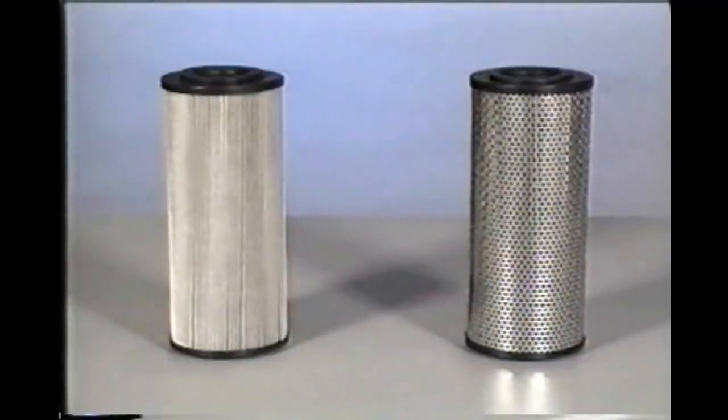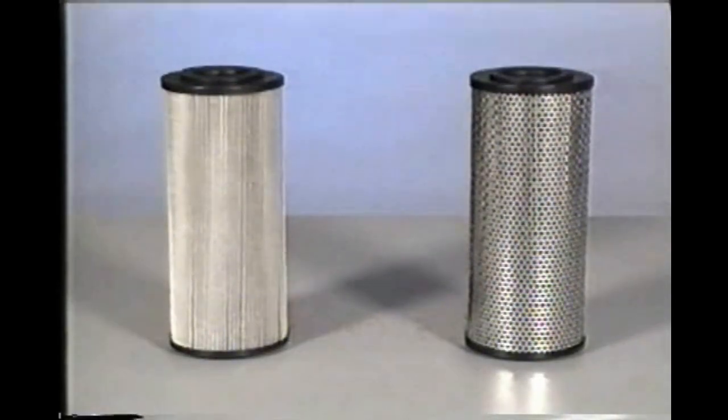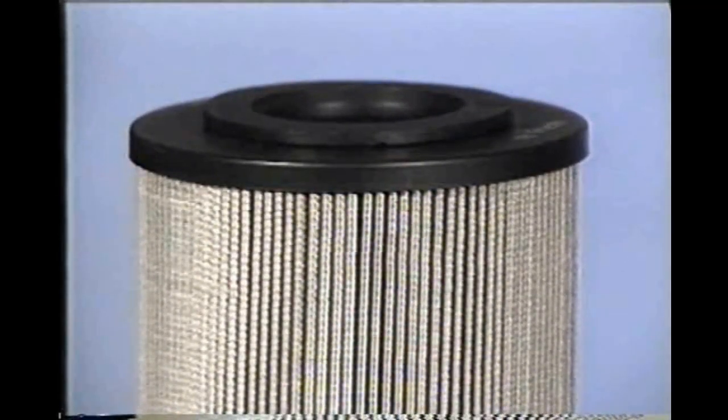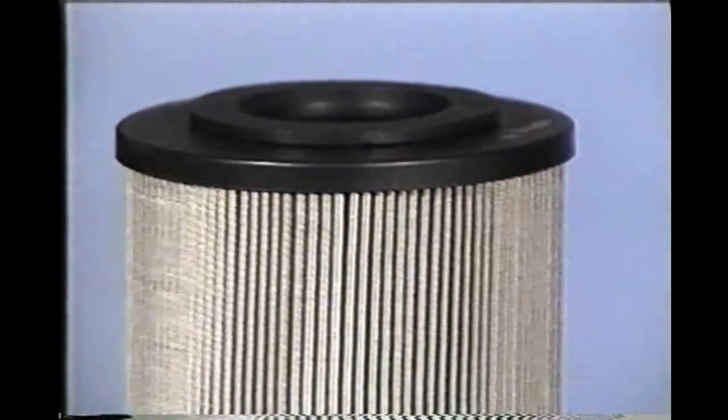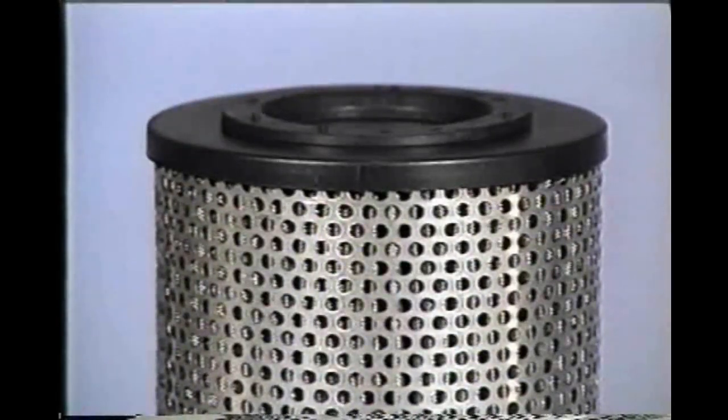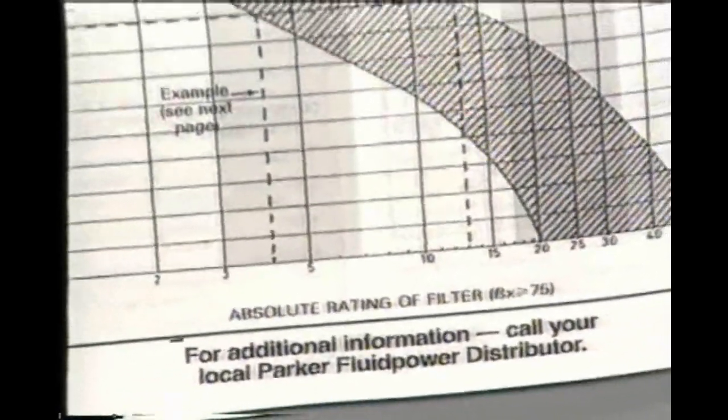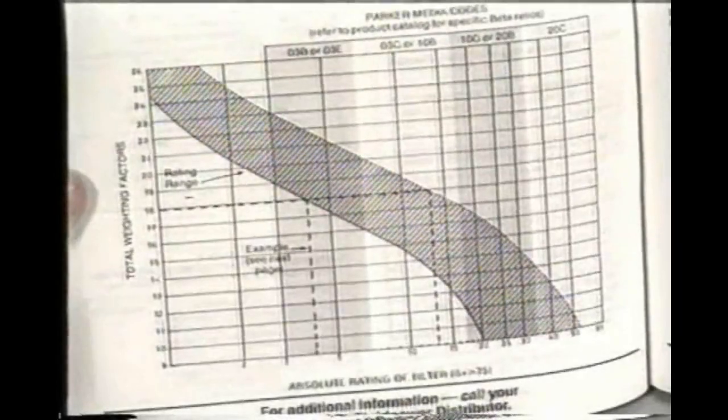The second type of filter, the surface filter, works like a kitchen strainer. It's a wire mesh or perforated metal sheet through which the hydraulic fluid passes. Wire mesh is similar to the screen wire used on your screen door at home, except it's usually made of bronze or stainless steel. Perforated metal is simply a sheet of metal with holes punched through it.